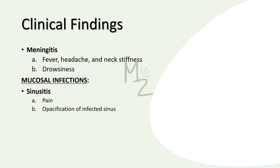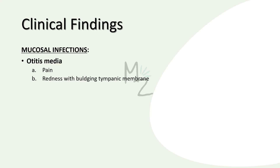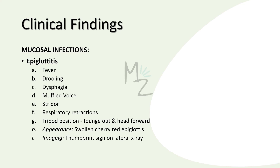Mucosal infections: Sinusitis causes pain in the specific sinus that is infected and there is opacification of that infected sinus. Otitis media also has pain in the region of infection and there will be redness with bulging tympanic membrane. Epiglottitis is the inflammation of the epiglottis, part of our upper respiratory tract. It presents with fever and drooling — drooling occurs because of the swollen epiglottis, as the person is not able to swallow saliva. There will be dysphagia, muffled voice, stridor — which means a high-pitched wheezing sound — respiratory retractions, and the person will have a tripod position with the tongue out and the head forward to make swallowing easier.